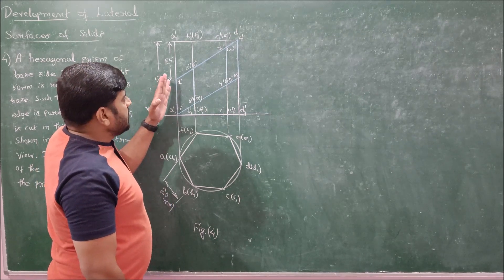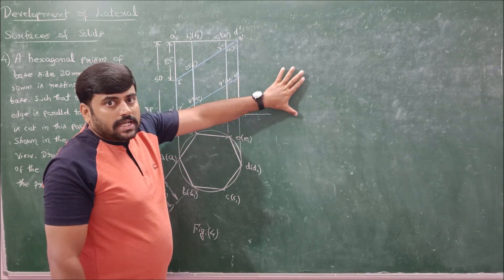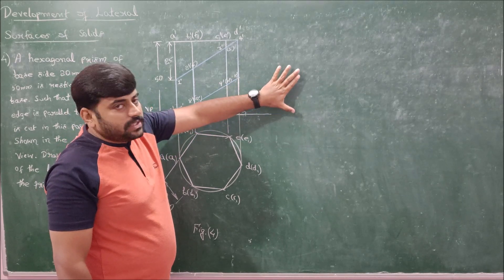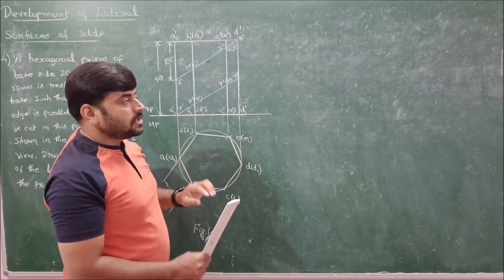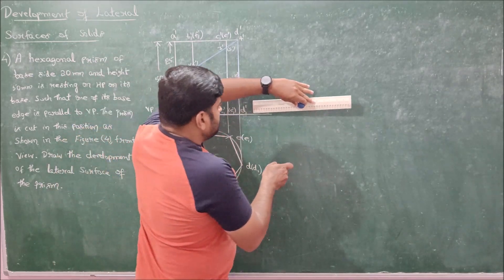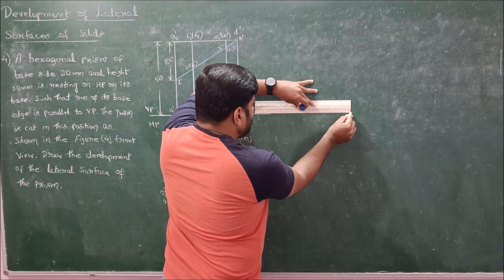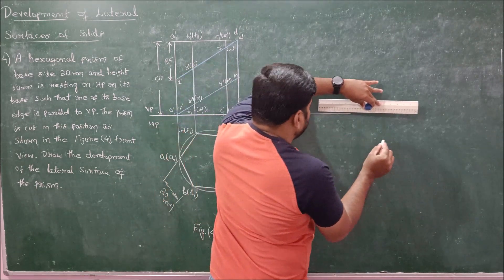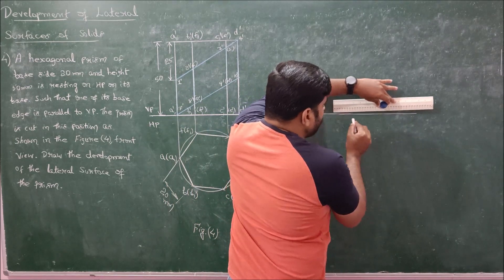So before laying down the cutting plane into the unfolded hexagonal prism, first let us lay down the unfolded lateral surfaces of this hexagonal prism. So if I do that, let me take a parallel line from this prism. Since we are doing development of prism, it can be solved by using parallel line method of development which we have already discussed.